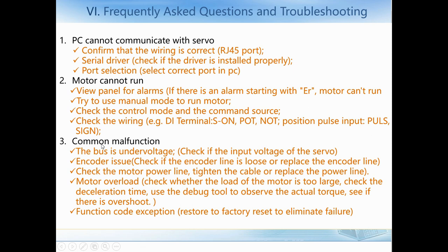Here are some common malfunctions. For bus under-voltage, check if the input voltage of the servo is correct. For encoder issues, check the encoder cable and sometimes replace it. For motor power line issues, tighten or replace the power line if it is loose. For motor overload, check whether the load is too large, check the deceleration time, and use the debug tool to observe the actual torque and see if it overshoots. For function code exceptions, restore to factory settings to eliminate the failure.